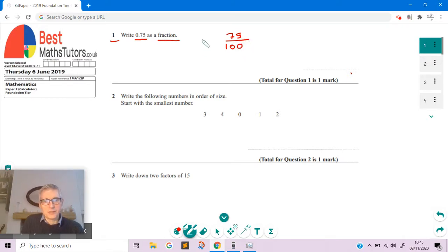So that's the fraction 0.75 converted into a fraction, but then we'd want to try and simplify the fraction by canceling it down. To do that, we look for numbers which will divide into the top and bottom of this fraction, and we can divide the top by 25 and the bottom by 25.